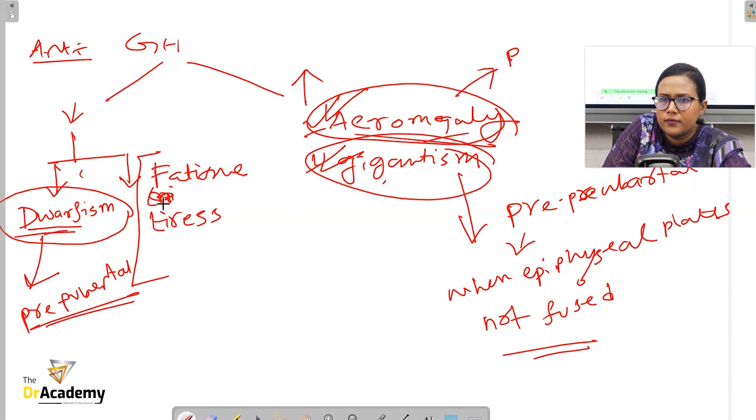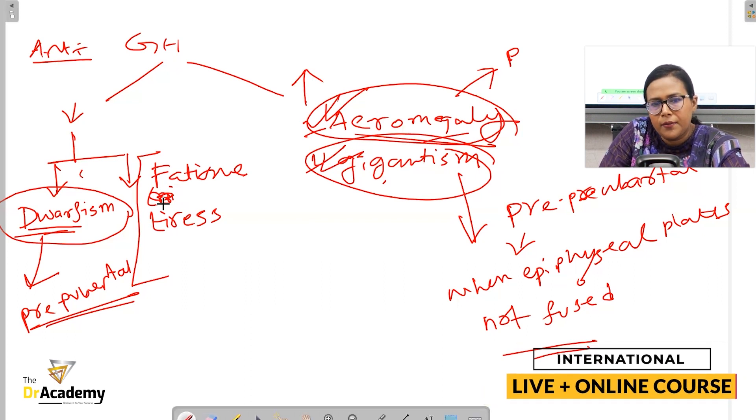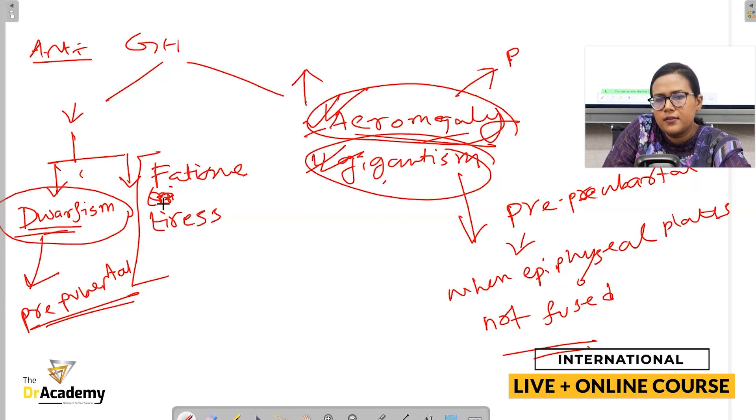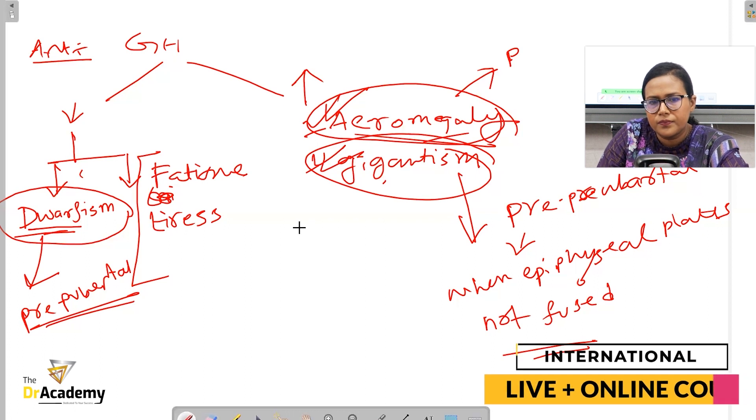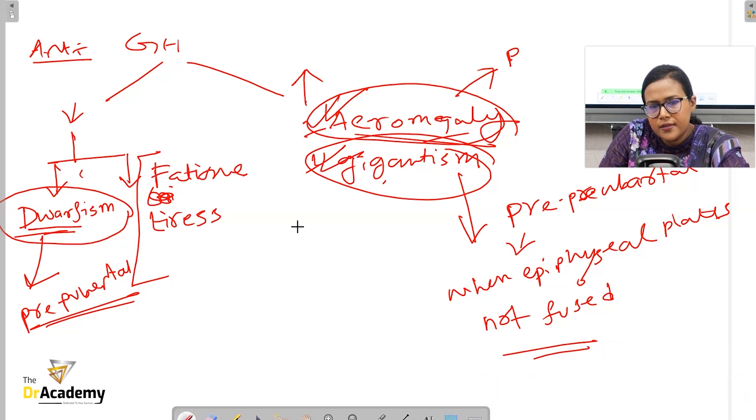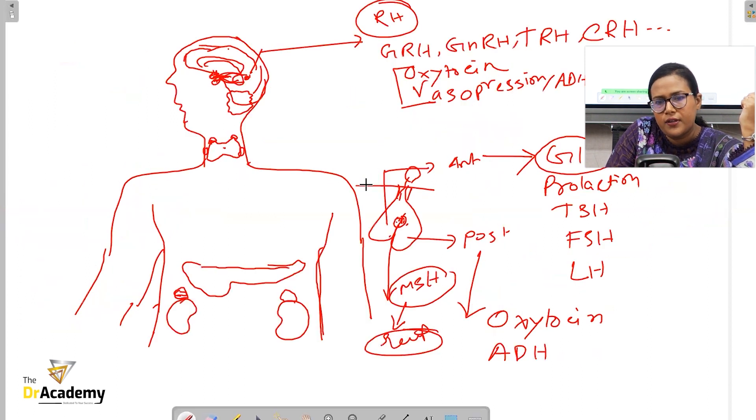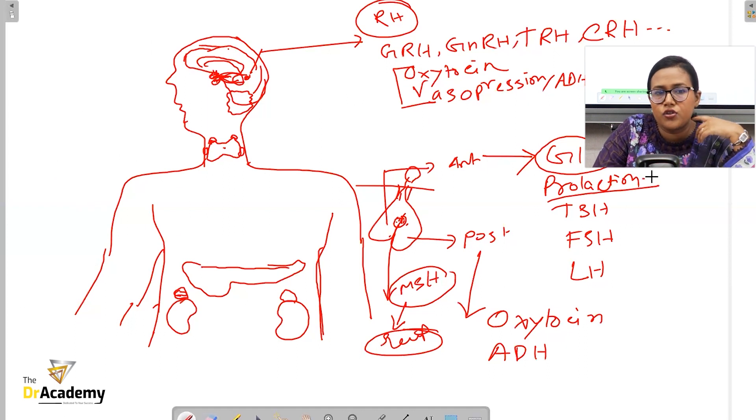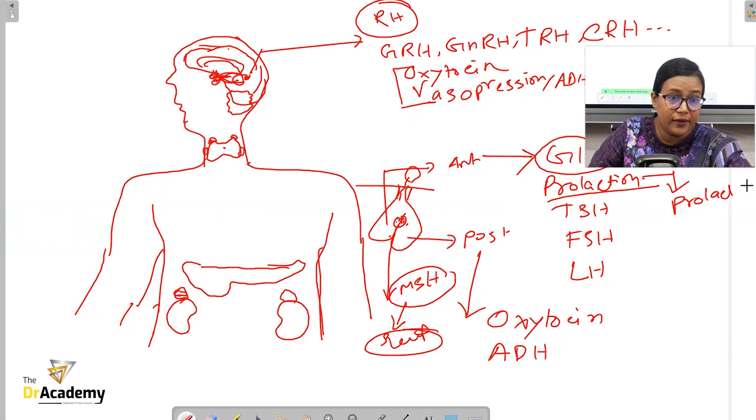Other features include amenorrhea in females, and visual problems if the tumor is pressing. If the tumor is big enough to compress the optic chiasm, you might experience compressive symptoms like headache or visual difficulty. We'll discuss prolactinoma later - this is just which hormone is associated with what type of pathological findings.